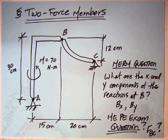It's got an applied couple of 70 newton-meters. The dimensions are shown, and then he has this link two over here, curve member BC. The MERM question is: what are the X and Y components of the reactions at B, meaning what is Bx and By?